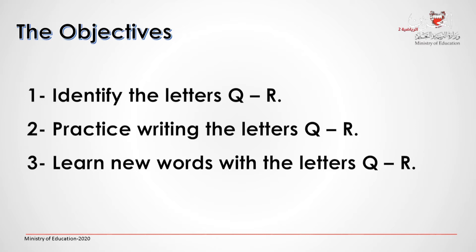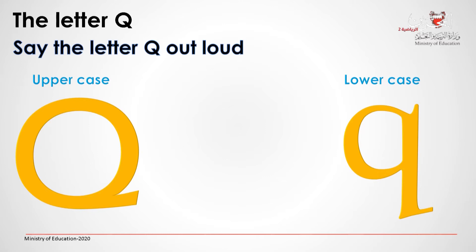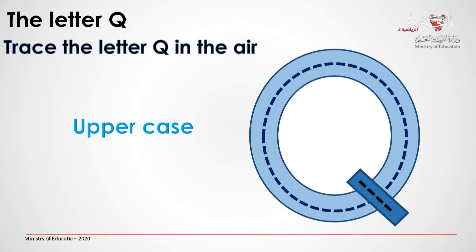The letter Q. Say the letter Q out loud. Listen and repeat: Q, Q. Very good. This is an uppercase Q — a capital letter Q — and this is a lowercase Q — a small letter Q. Trace the letter Q in the air. Raise your finger and follow the arrows in the picture.